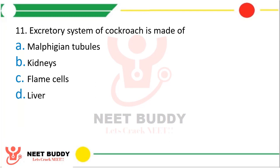Question eleven: Excretory system of cockroach is made of — option A, Malpighian tubules; option B, kidney; option C, flame cells; option D, liver. The correct answer is option A, Malpighian tubules.